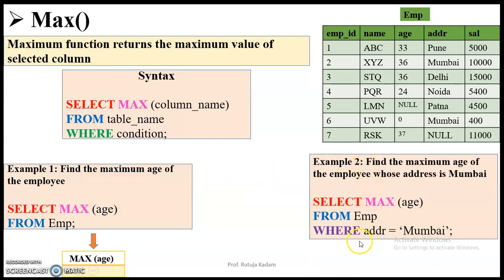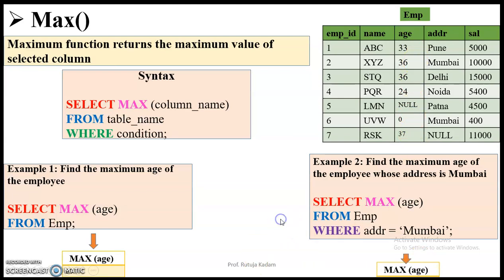The second example uses the WHERE clause: find the maximum age of the employee whose address is Mumbai. The employees with address Mumbai are employee ID 2 and employee ID 6. Employee ID 2 has age 36. Comparing 36 and 0, the age 36 is the maximum. So the output will be 36.